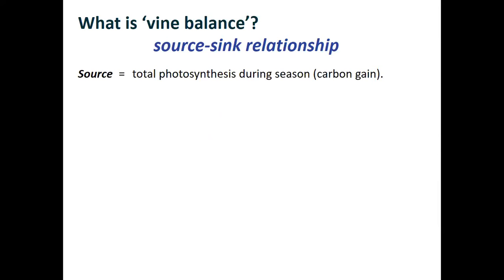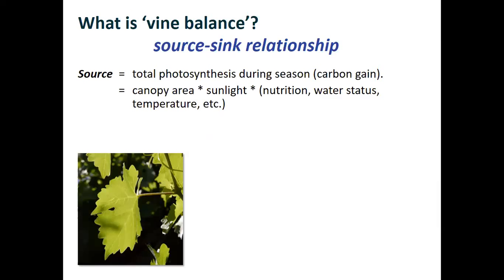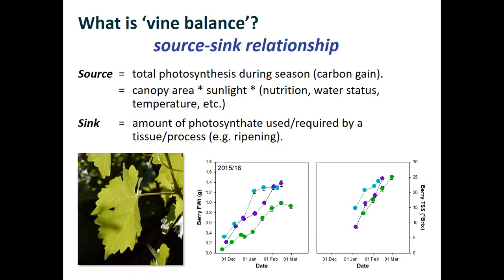In essence, when we ask what vine balance is, it's what in plant science we would call a source-sink relationship. The reason we consider the vigour of the vine is that the source here is the total photosynthesis occurring during the growing season — the amount of carbon the vine fixes from the atmosphere and turns into sugar for growth and fruit ripening. That's a function of canopy size, how much sunlight the vine receives, the nutrition, the water status, the temperature, and so on. The sink we're interested in is the fruit itself, the ripening of that fruit.